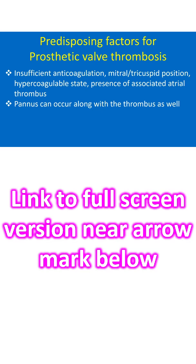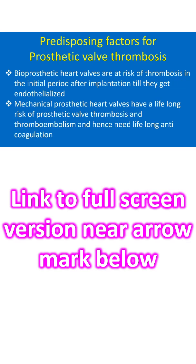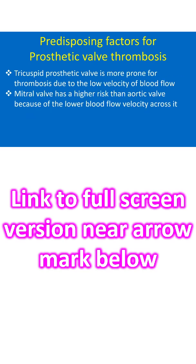Pannus can occur along with the thrombus as well. Bioprosthetic heart valves are at risk of thrombosis in the initial period after implantation until they get endothelialized. Mechanical prosthetic heart valves have a lifelong risk of prosthetic valve thrombosis and thromboembolism, and hence need lifelong anticoagulation. Tricuspid prosthetic valve is more prone to thrombosis due to low velocity of blood flow. Mitral valve has a higher risk than aortic valve because of the lower blood flow velocity across it.